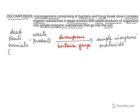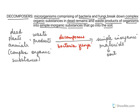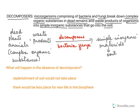This dead decaying material contains complex organic substances or products present in dead plants and animals, or in the waste of plants and animals. These complex organic substances are decomposed into simple inorganic material, which then enters the soil and back into the ecosystem.